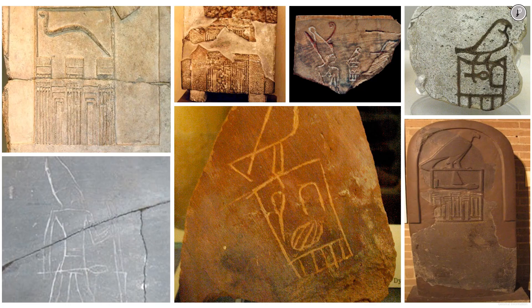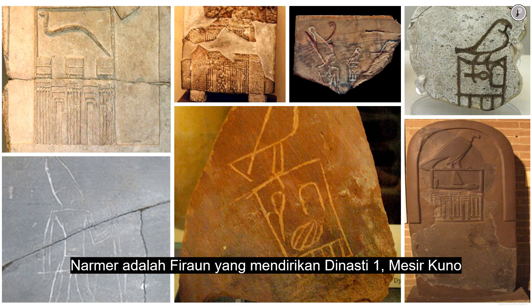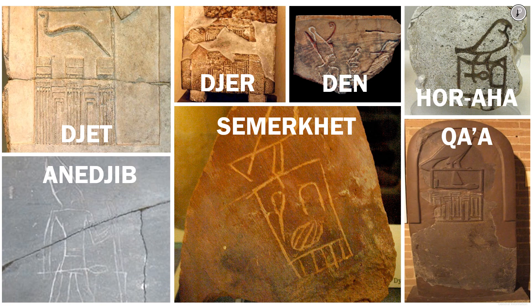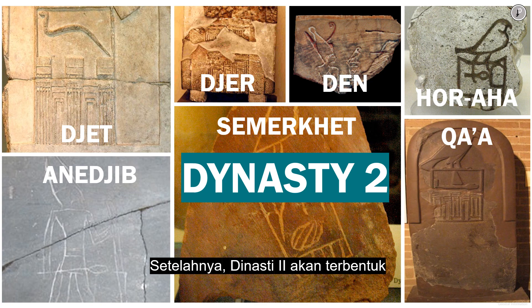Narmer was the pharaoh who founded Dynasty One of ancient Egypt. His throne was continued by Hor-Aha, Djer, Djet, Den, Anedjib, Semerkhet, and Qa'a. After that, Dynasty Two would be formed.